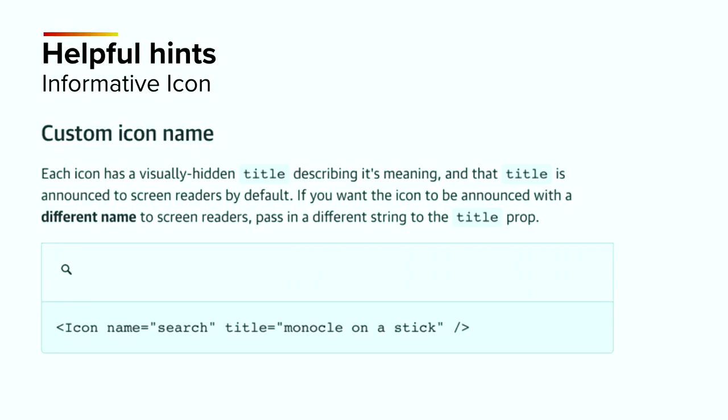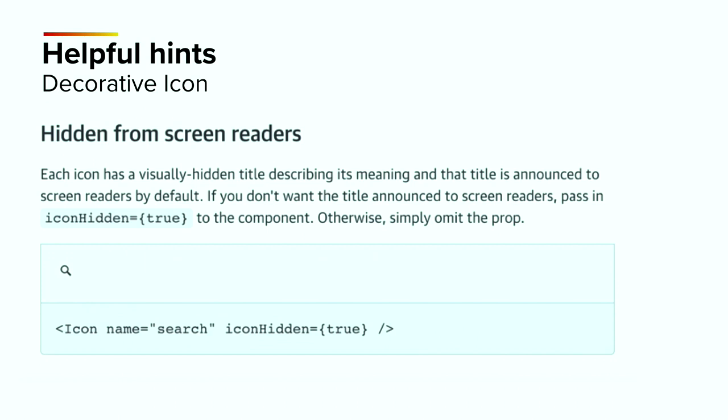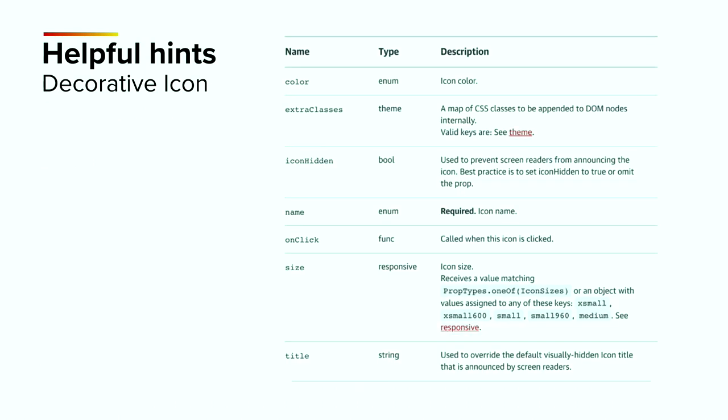Provide some helpful hints to your users — give them more guidance on how to apply each variation of your component. For example, helpful hints on how to use an informative icon with a custom icon name, including descriptions and code blocks. Props tables are hugely important so developers can see at a glance which props are available, what types they are, a description of each, and whether they're required or not.